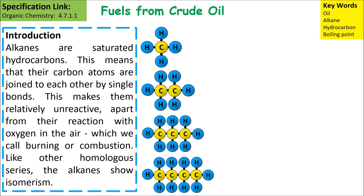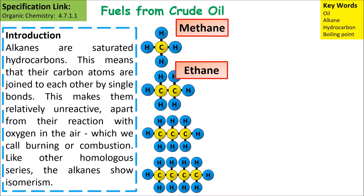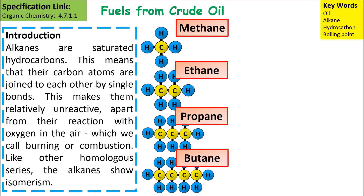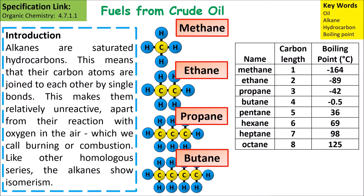They form similar molecules. Starting off, we have methane which is one carbon atom, then ethane which is two, propane which is three, and butane which is four. We can see from this table that as the chain length increases, their relative boiling points also increase — methane has a very low boiling point.